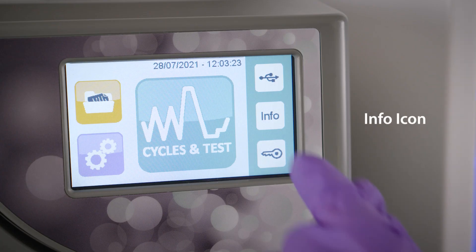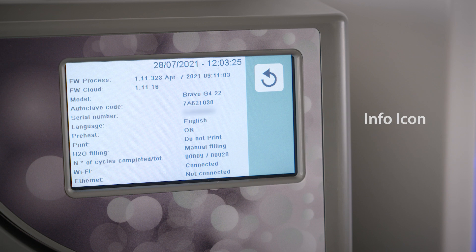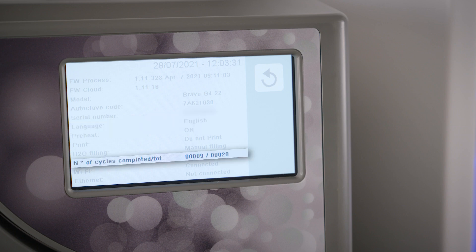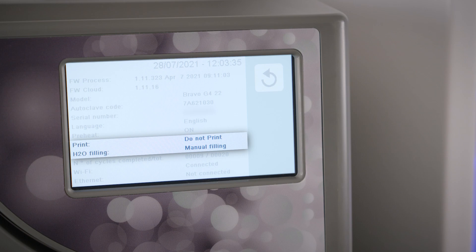The Info icon provides detailed information about your unit, such as the current firmware version, serial number, language, cycle count, connectivity status, and devices connected to the unit.